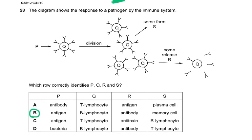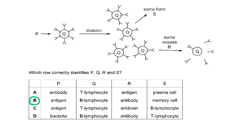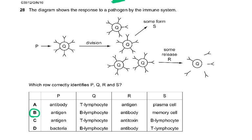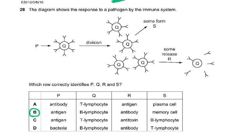Question 28: the diagram shows the response to a pathogen by the immune system. P undergoes division; some form S; some release R. The correct identification is: P is B lymphocyte, Q is antigen, R is antibody, and S is memory cells.